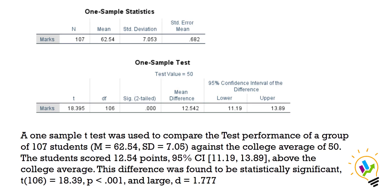This difference was found to be statistically significant, t(106) = 18.39, p < .001, and large d = 1.777. This d value is the effect size, Cohen's d, which I've already calculated in my previous video.